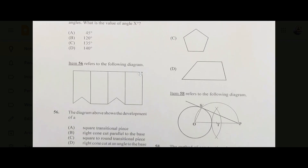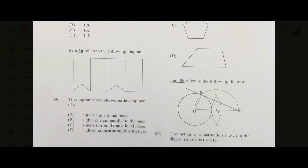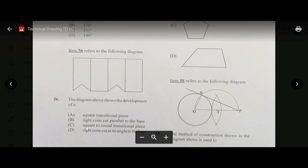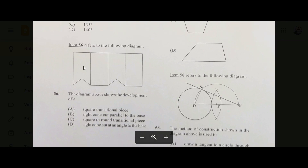Number fifty-six: the diagram shows the development of a shape. It's not a cone, so B is out. It's not square to round since I'm not seeing the round part. It's not a cone cut at an angle either. By process of elimination, the answer is A — a square transitional piece.